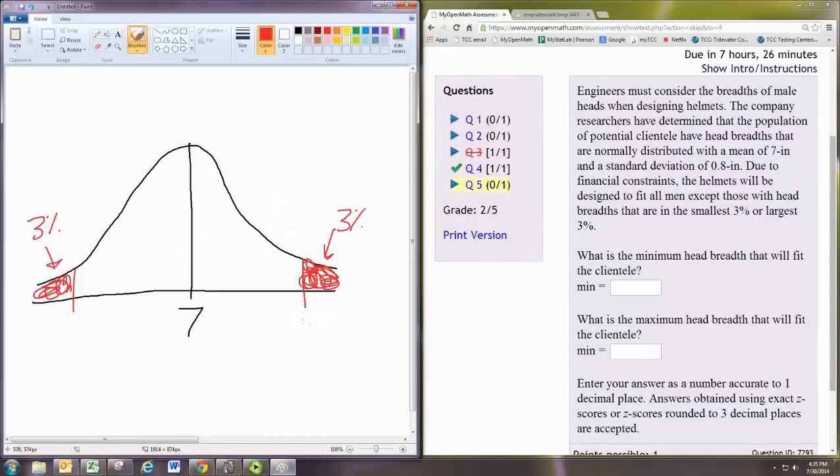And you know these numbers, the one on the right is bigger than 7, and the one on the left is less than 7. And they should also be the same distance away because of the symmetry. So we can actually use the picture a little bit to help.